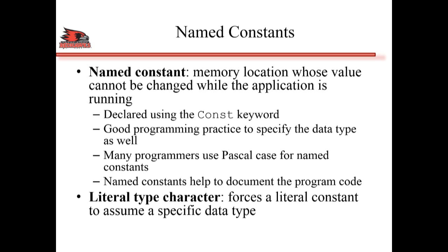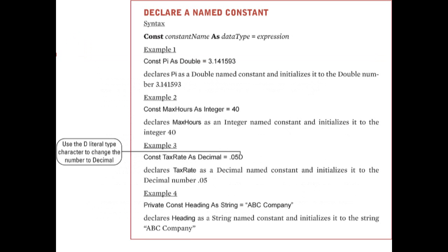In these cases, named constants prove to be useful. What we mean by literal type character is that you can force a constant to be a certain data type using some characters. For example, Example 1 defines pi as a double which is equal to 3.141593, and you can then use this pi constant variable in a bunch of mathematical equations.